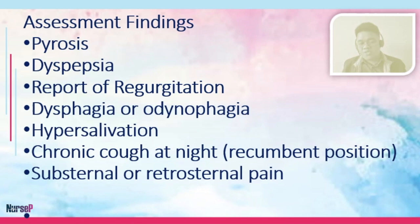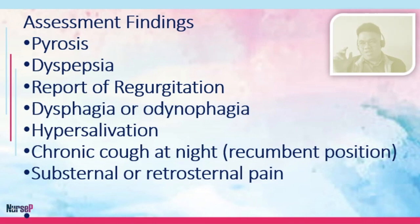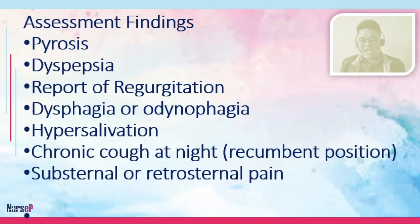We also have hypersalivation — increased saliva — and then chronic cough at night, especially when the patient is in a recumbent position. This is due to the irritation of the acid, especially if the patient is already flat in bed, as the tendency is for acid to backflow from the stomach towards the esophagus. The patient may also present with substernal or retrosternal pain, which is atypical, and of course signs of esophagitis.